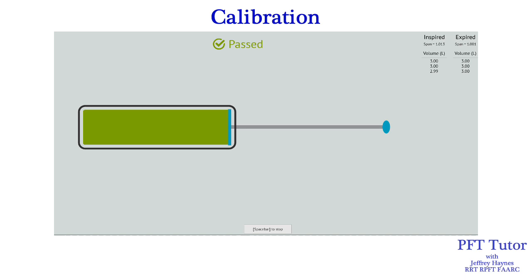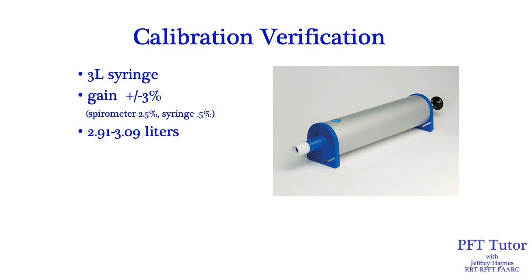Calibrating is adjusting the machine so it will read the desired target. According to the American Thoracic Society and European Respiratory Society standards, an acceptable calibration verification with a 3-liter syringe should read 3 liters plus or minus 3%. There's a 2.5% error for the spirometer and a half percent error for the syringe, so cal verifications should read between 2.91 and 3.09 liters.